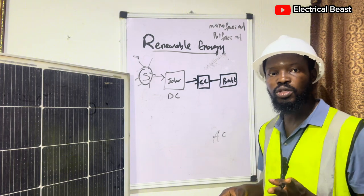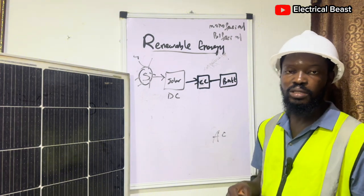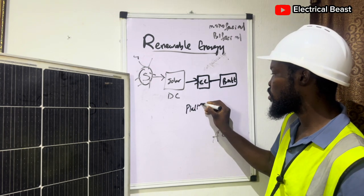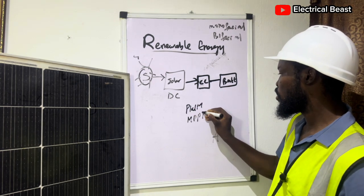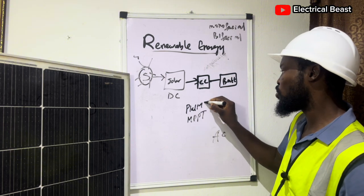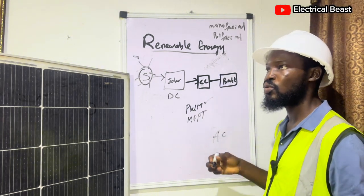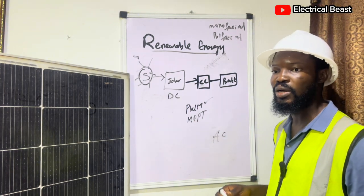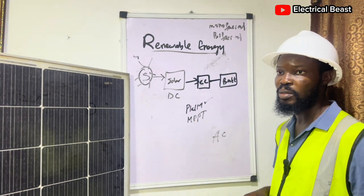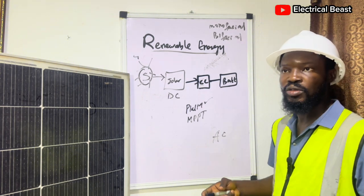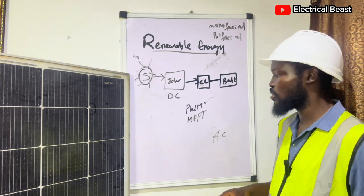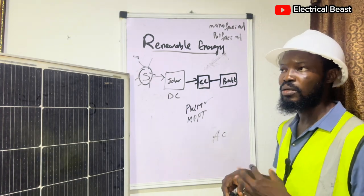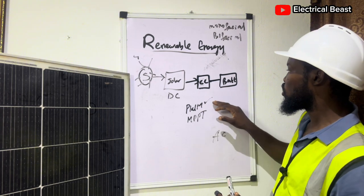PWM stands for Pulse Width Modulation, and MPPT stands for Maximum Power Point Tracking. PWM is cheaper and is used for smaller systems — 12V and 24V systems. MPPT is used for larger systems that require a large number of panels, probably lithium batteries and other kinds of sophisticated battery setups. That's when you use MPPT charge controllers.